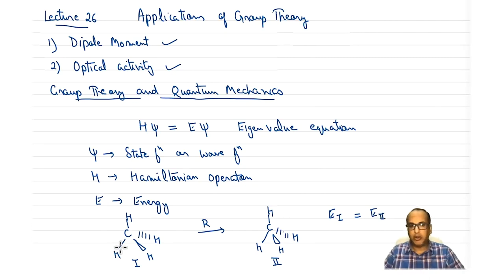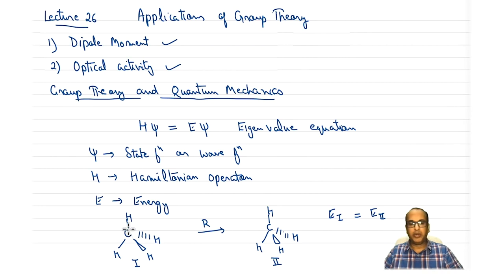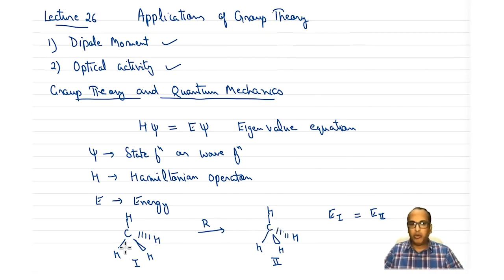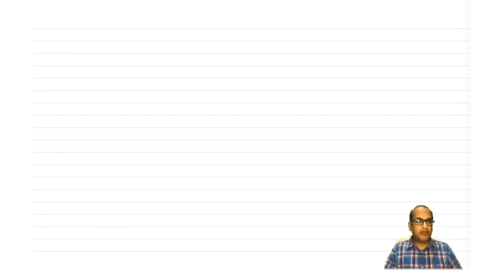Similarly for the bonds: the electron density in one bond is replaced with an identical electron density from another equivalent bond. These are all identical particles because they have similar locations with respect to any particular point in the molecule. So we are moving identical particles around and in the process we are not perturbing the energy of the system.